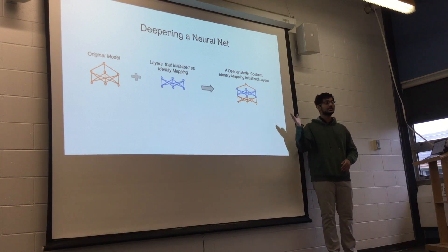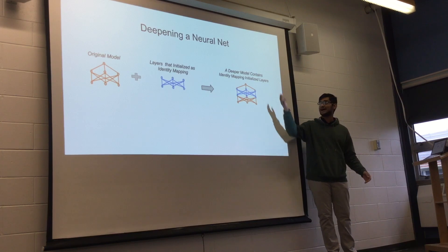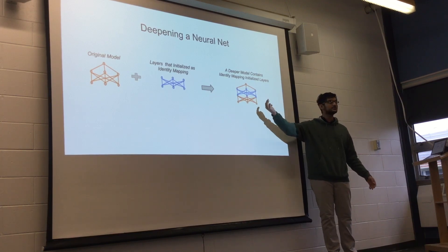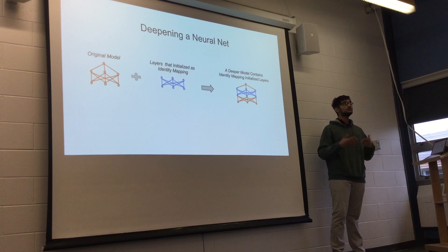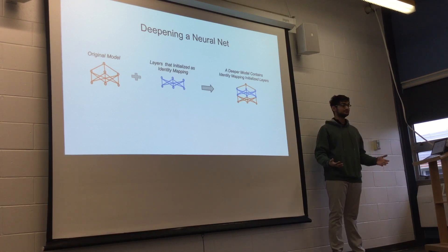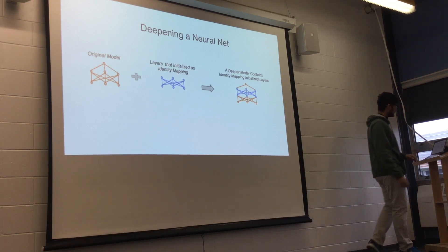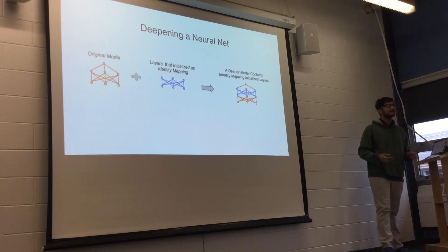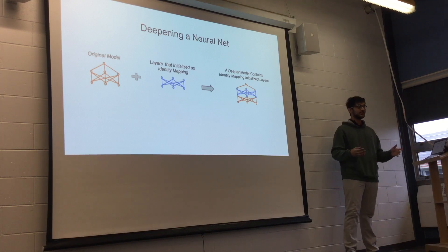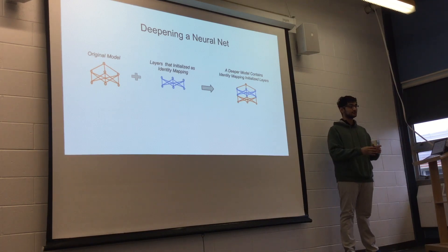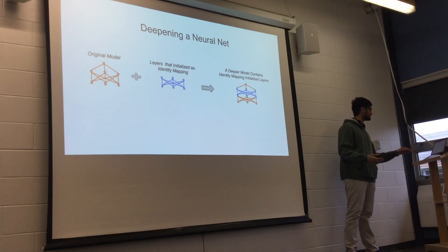They have math that shows it can be done for every common activation function used. By having an identity layer, they haven't damaged any of the learning — they're just passing it through: it takes in the three inputs and spits them out exactly. And then you can start training. In this way, they can take an existing neural net, make it more complex and bigger, and not have to start from scratch.